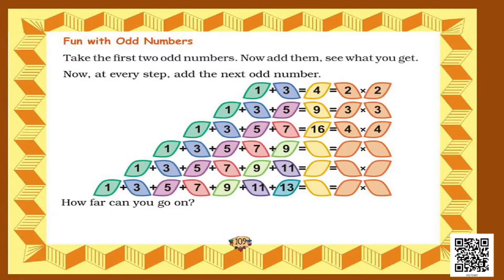Students, let's now have some fun with odd numbers. Take the first two odd numbers — 1 and 3 — and add them: 1 plus 3 equals 4. At every step, add the next odd number. In the next step we have 1 plus 3 plus 5, which gives us 9. If we keep increasing the number of odd numbers and add them up, we will get 16, 25, and so on.